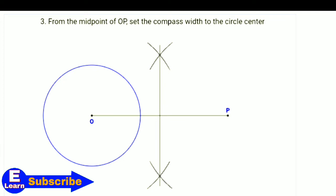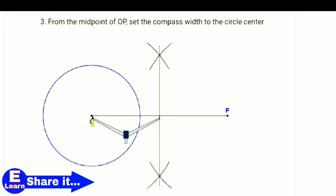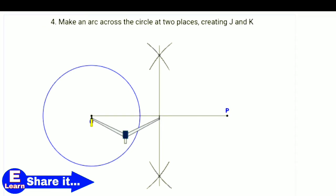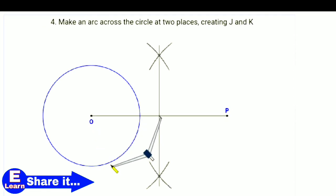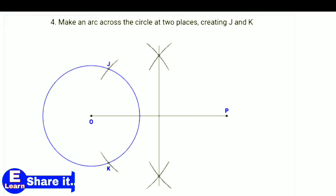From the midpoint to the circle center, set the compass width. Make an arc across the circle at two places, creating points J and K.